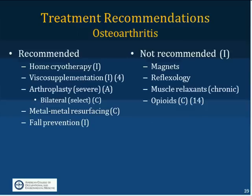Home cryotherapy — putting ice packs on the area — is recommended by consensus, though it's not clear it can penetrate the area. Viscosupplementation such as Synvisc is consensus-recommended; there are four trials but they didn't reach a clear conclusion. Arthroplasty, if severe, has A-level evidence. Bilateral arthroplasty at the same time has C-level evidence, with the obvious issue of requiring significant nursing home and home care. Metal-to-metal resurfacing has some evidence. Fall prevention is clearly recommended as these patients tend to be somewhat unstable. Magnets and reflexology have no supporting evidence. Chronic muscle relaxants have no data. Opioids have C-level data that they are not a good idea in this instance, across 14 trials.